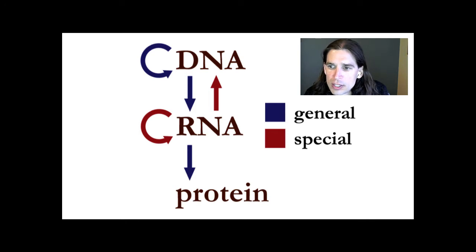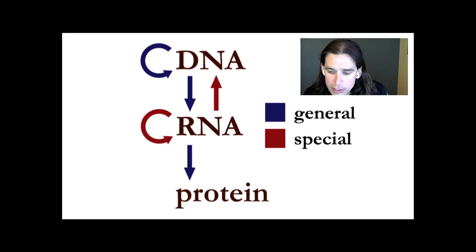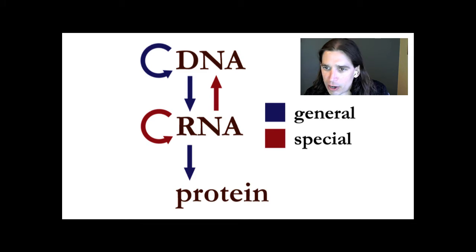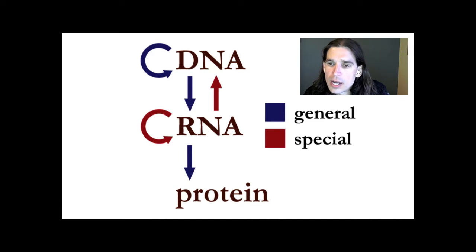There are a few special cases. In some cases, RNA can be reverse transcribed into DNA. This is used, for example, by RNA viruses, which use some of their own enzymes and some host enzymes to take their RNA genome and convert it into DNA that can be used in the host cell to transcribe viral messenger RNAs and viral proteins. Some RNA viruses will also replicate their RNA to create a new RNA genome, similar to DNA replication but occurring at the RNA level.